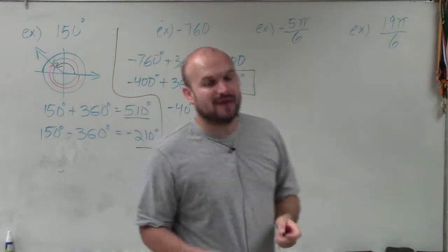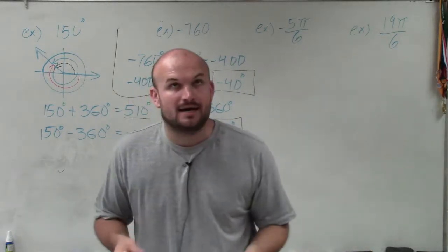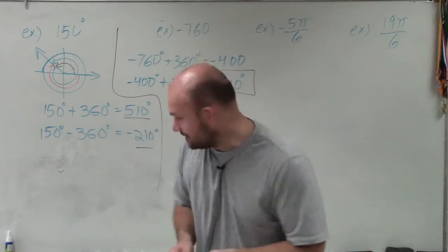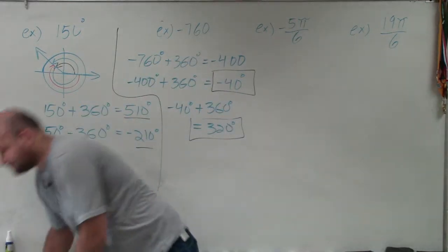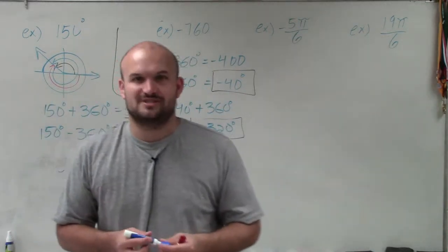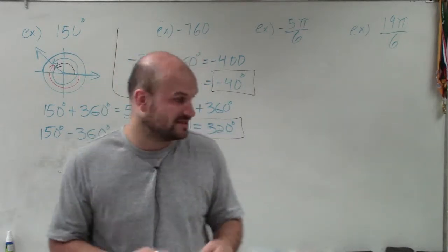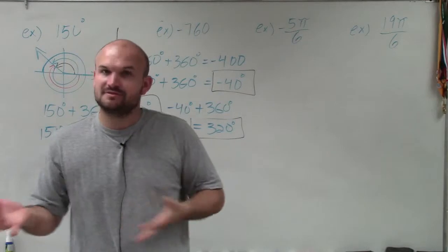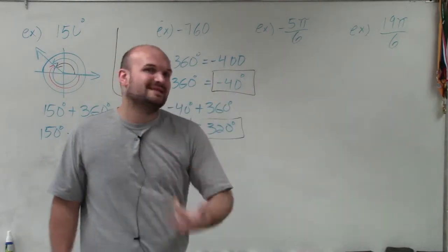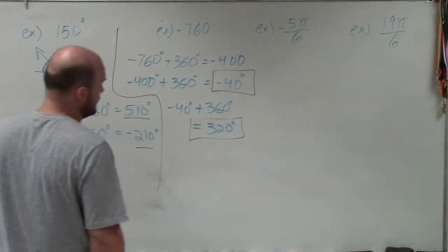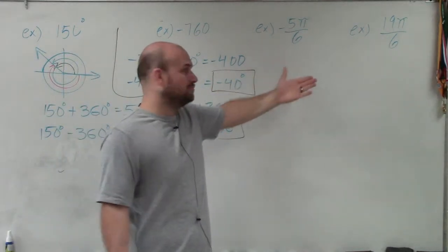Now let's get to radians. When dealing with radians, a lot of students have a little trouble because we start getting into fractions again. It's very important to remember that 2 pi is equivalent to 360 degrees. So as far as the process goes, we're going to be doing the exact same thing — all I simply need to do is add and subtract 2 pi.